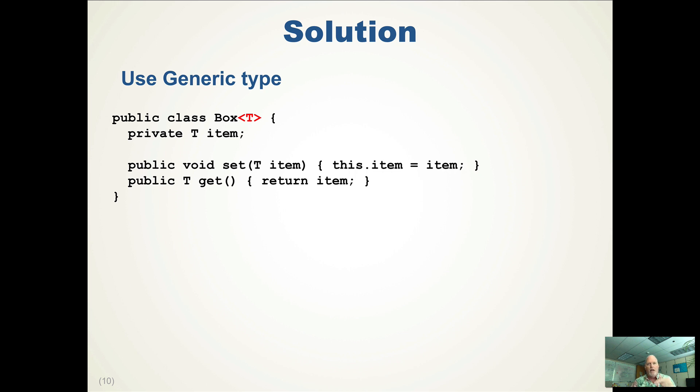Notice that in the class we're using the T, the capital T in this case, to represent the actual class. So item is of type T. We don't know what T is yet, but when we instantiate a box, we have to declare what type T is.